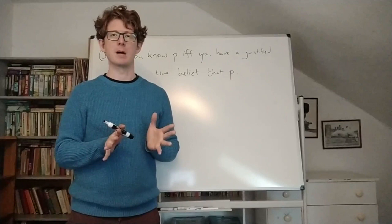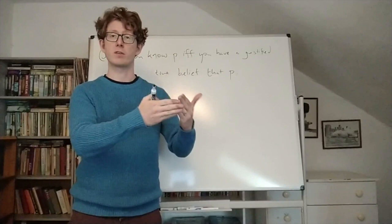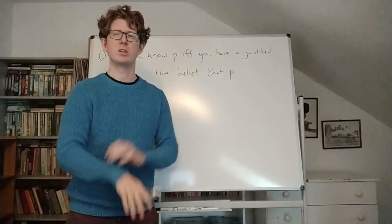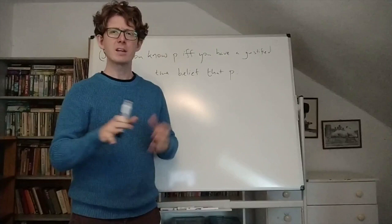Gettier gave these slightly more complicated examples using inference. The idea was that he constructed a case of justified true belief without knowledge by starting with a proposition that was false, but that you had a justified belief in, and constructing a case where you infer a true proposition from that, usually a disjunction. But these cases involving inferences are a little bit unnatural, so there's actually a much simpler kind of case that makes the same point.